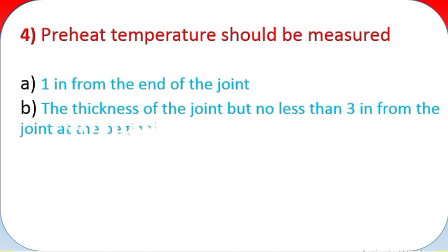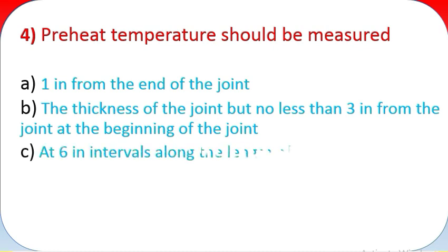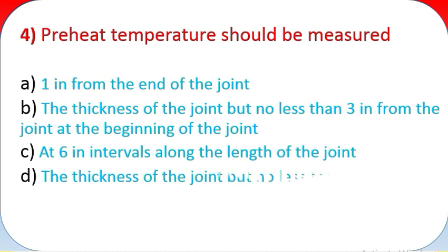Question 4: Preheat temperature should be measured. A: 1 inch from the end of the joint. B: The thickness of the joint but no less than 3 inches from the joint at the beginning of the joint. C: At 6 inch intervals along the length of the joint. D: The thickness of the joint but no less than 3 inches from the joint along the entire length of the joint.